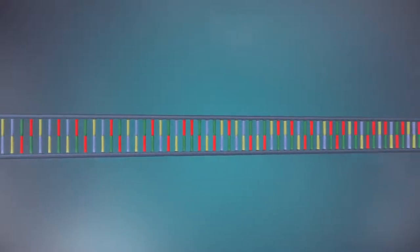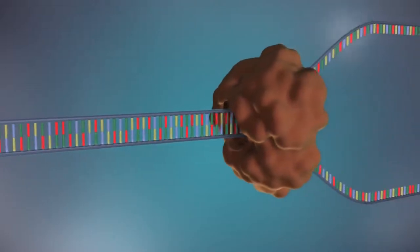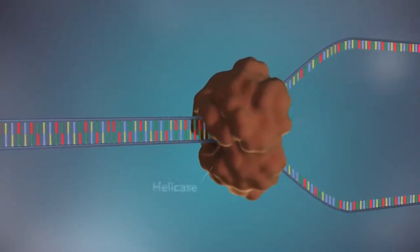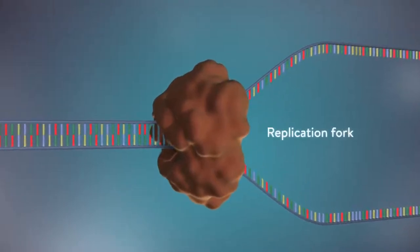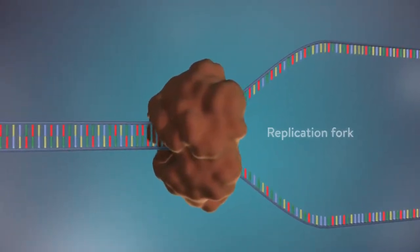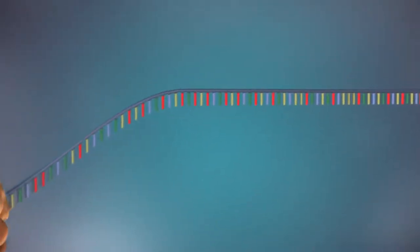The first step in DNA replication is to separate the two strands. This unzipping is done by an enzyme called helicase and results in the formation of a replication fork. The separated strands each provide a template for creating a new strand of DNA.